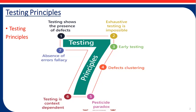The second principle is that exhaustive testing is impossible. Testing everything — all combinations of inputs and preconditions — is not feasible except for trivial cases. Rather than attempting to test exhaustively, risk analysis and test techniques should be used to prioritize and focus test efforts.